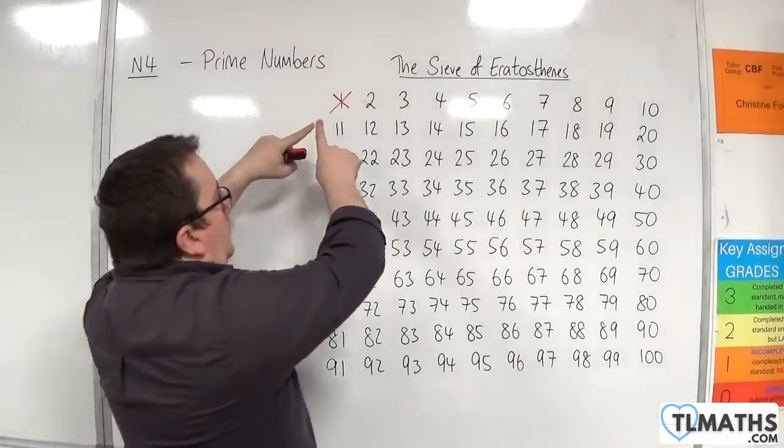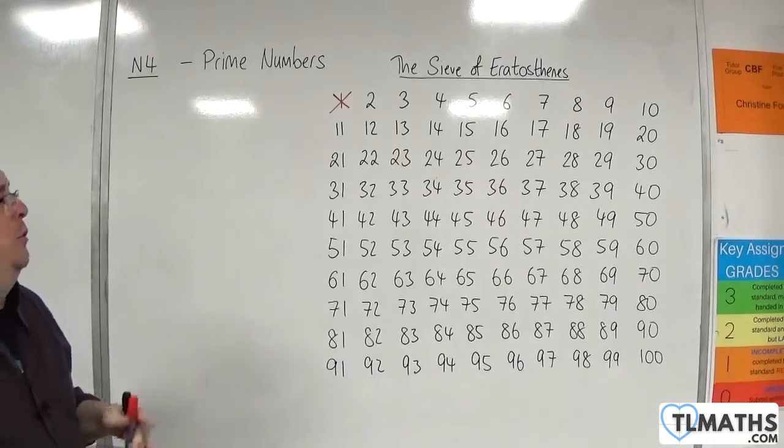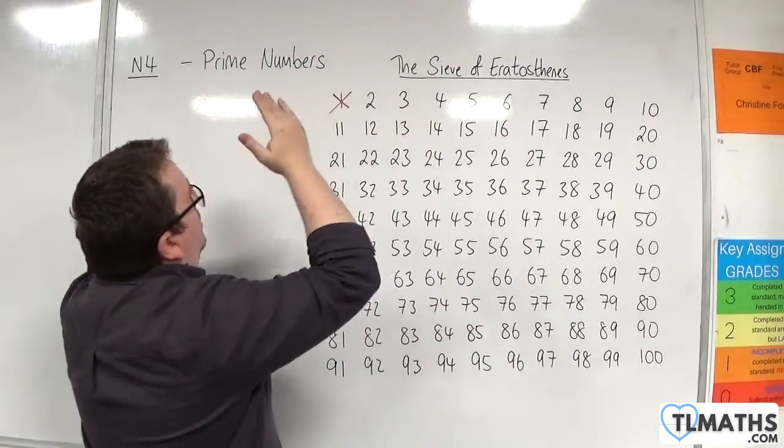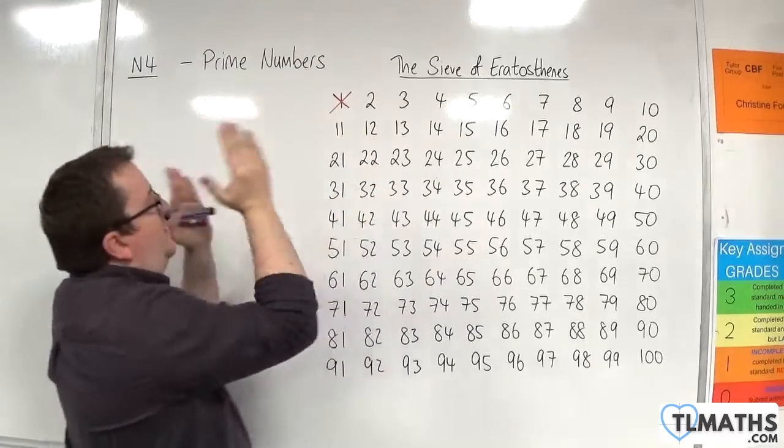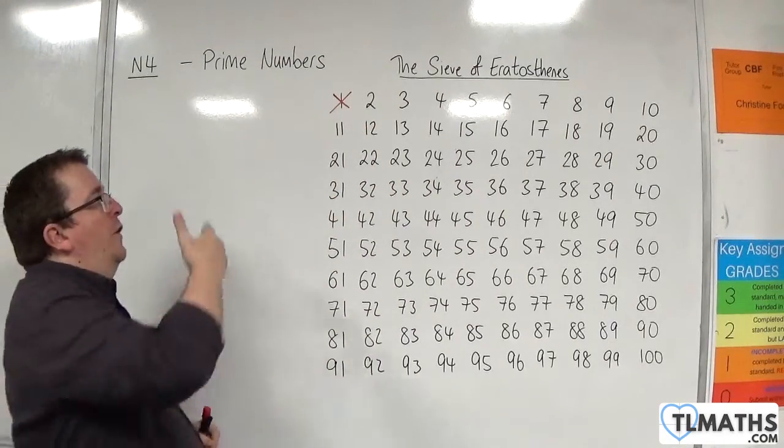So first of all what we're going to do is we're going to work our way along the list. Don't worry we're not going to need to go through all of these and find the factors of all of them but we're going to work our way along the list. So we've dealt with number one that is not a prime number because it only has one factor so let's move on to the number two.